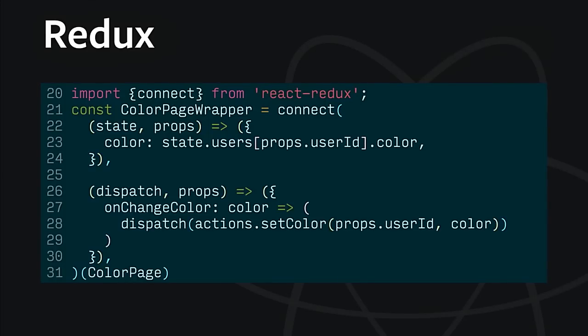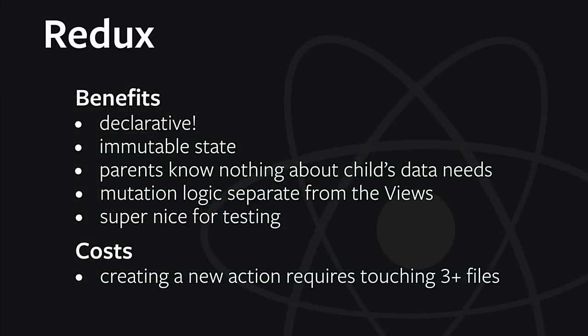Here's an example of using the connect wrapper function where we describe what prop we need — we need the color — and we can extract that from the global state. We also pass in a function that will call our action creator. The benefits: it's declarative. Each component is able to declare what state it needs and how to get it from the global state. You don't have to pass down all of this state through all of the props, and you can move a component from one place to another without worrying about re-plumbing. The mutation logic — the way you update your state — is totally separated from the view, defined as pure functions you can separately test. Usually it's the updating of state that contains the really difficult logic you want fully tested, whereas the view logic is usually pretty simple.